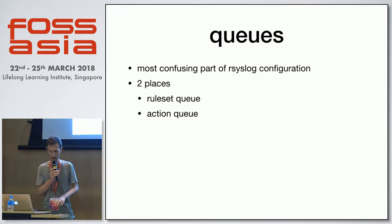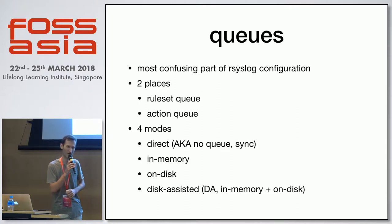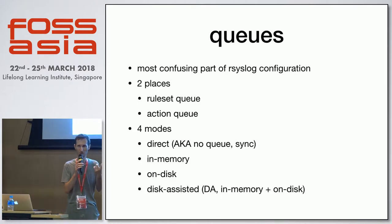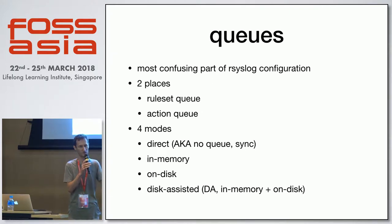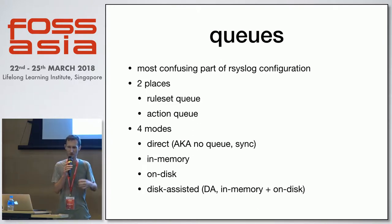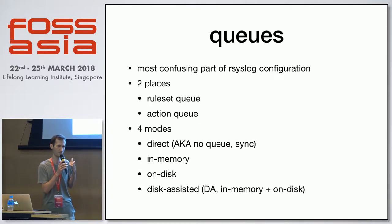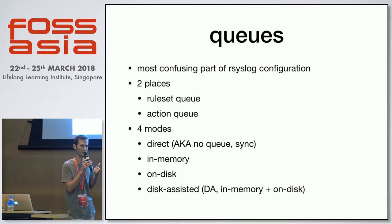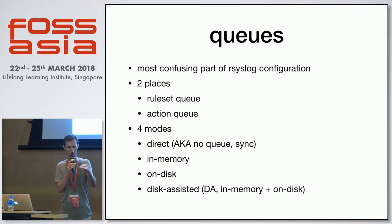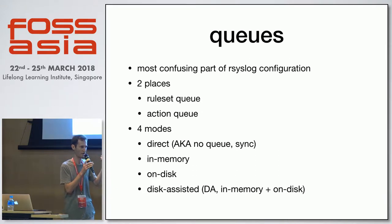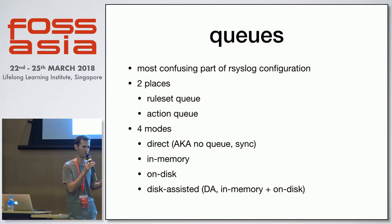Every queue operates in four modes. The first is direct mode — actually no queue — where a message appears on input and goes straight to output or to the rule set processor with no actual queuing. This mode has one big difference: it operates synchronously. When your action modifies a message, this is the only mode where subsequent actions can see that modified message.